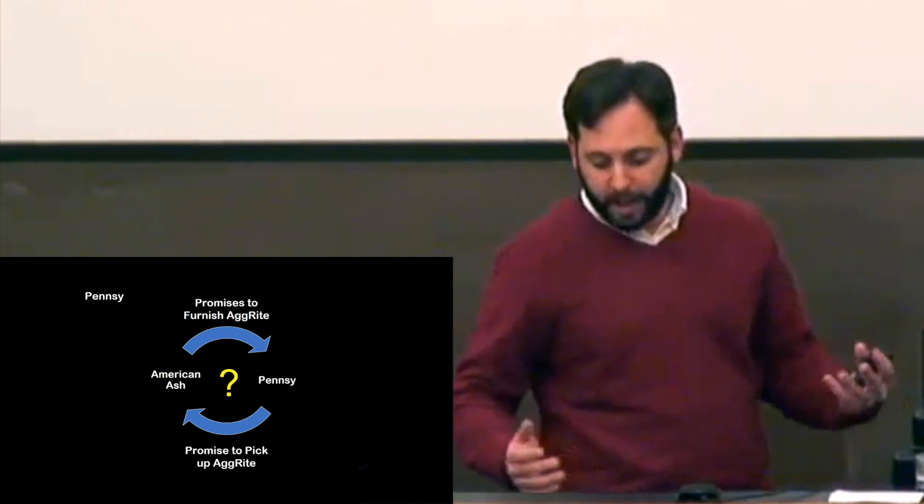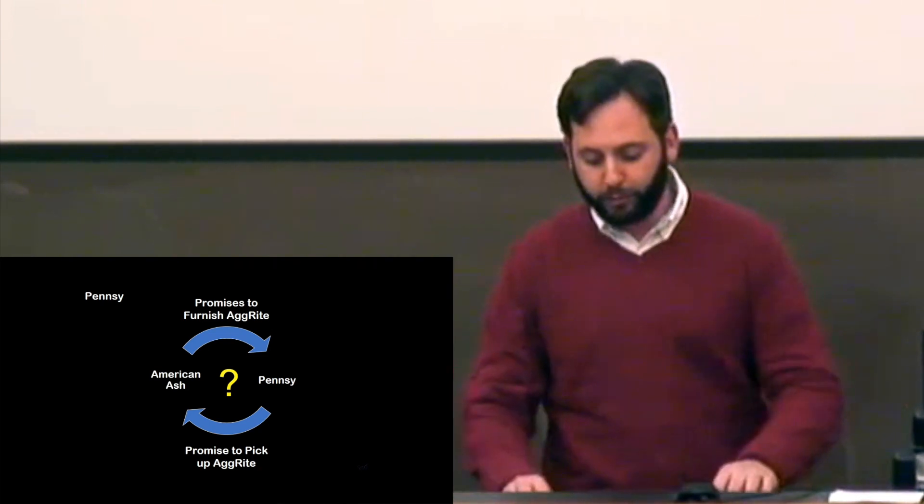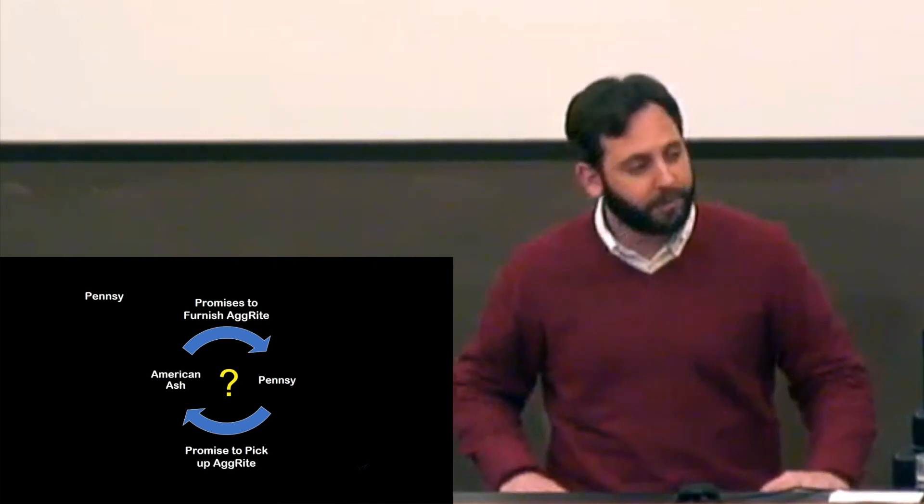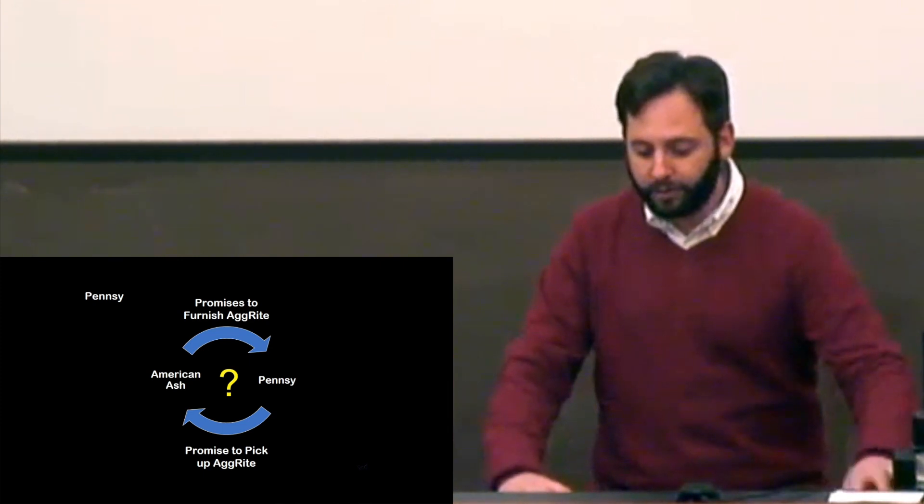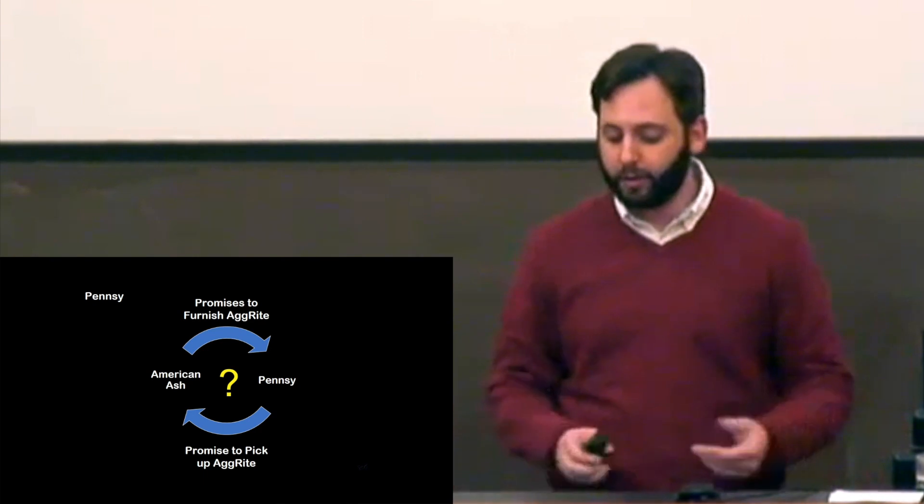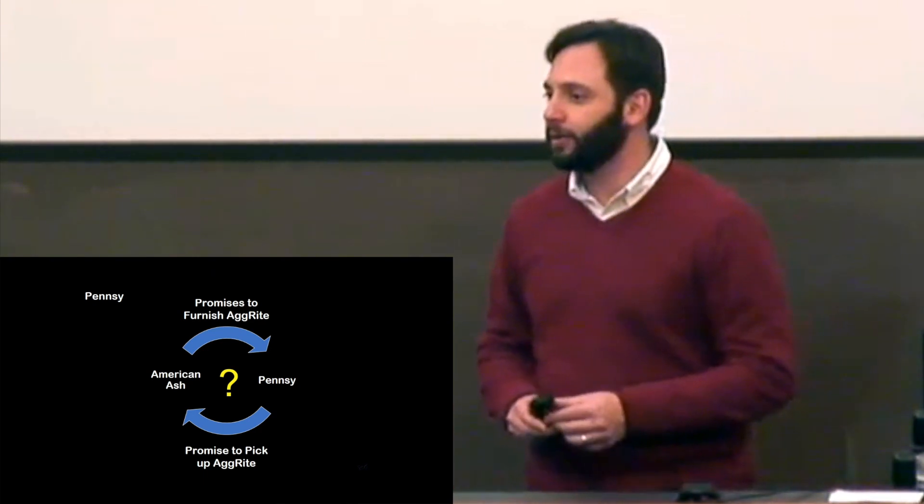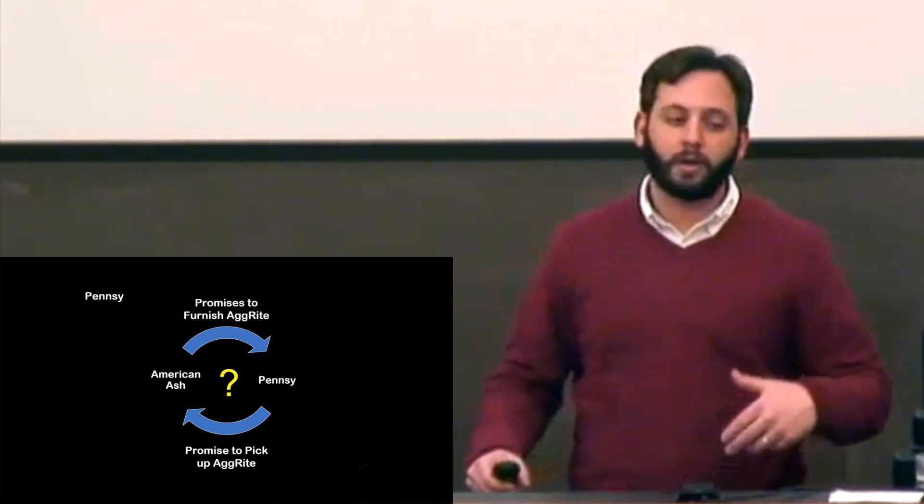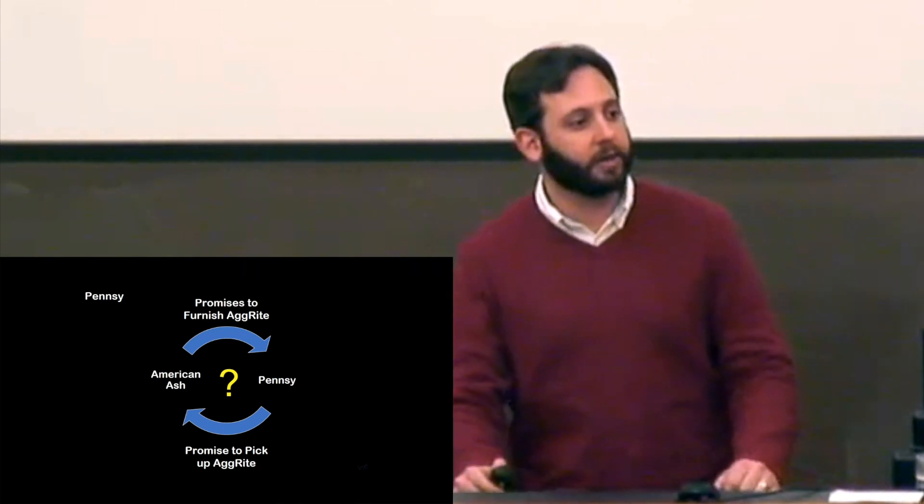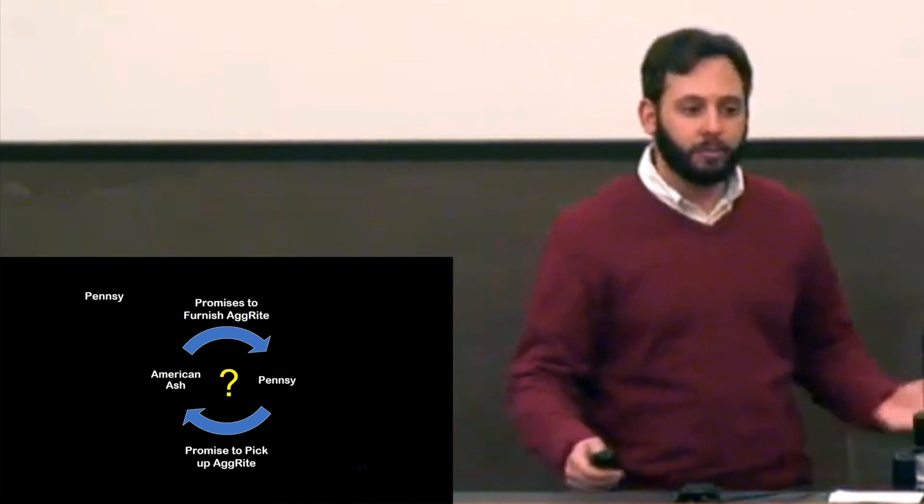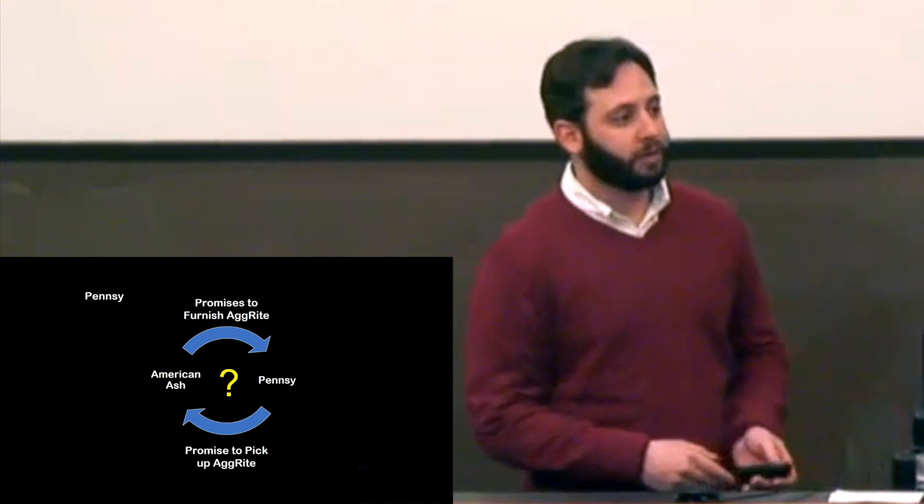The court seems to come out that it should be remanded for further proceedings, because the promise to haul away the agrite was not necessarily unsupported by consideration either. American Ash had excess material. It was probably not giving that material away as a gift, but rather in return for having it hauled away. In fact, we might not even call this a good. We could call it a bad. It had negative value. So the removal of that could be consideration for the provision of it.